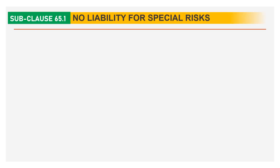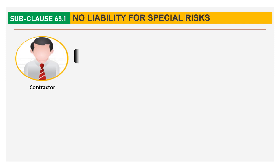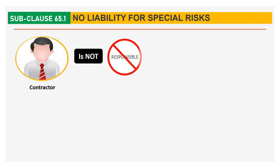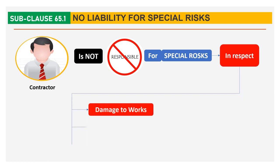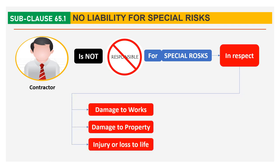Now we will discuss sub-clause 65.1, No Liability for Special Risk. The contractor is not responsible for Special Risks in respect of damage to works, damage to property, and injury or loss of life.